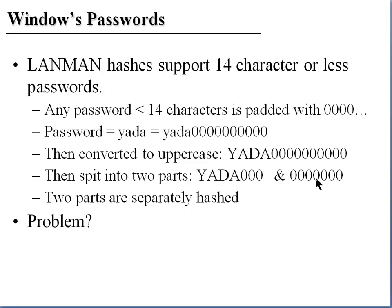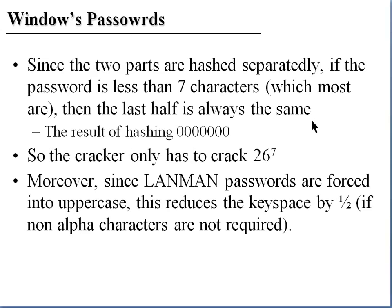What is the problem with this? First, since the two parts are hashed separately, if the password is less than seven characters — which most are — then the last half is always the same. That is, the resulting hash of seven zeros will always be identical. So the cracker only had to crack 26 to the 7th power. Moreover, since LAN Manager passwords are forced into uppercase, this reduces the key space by one half.